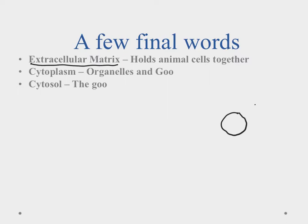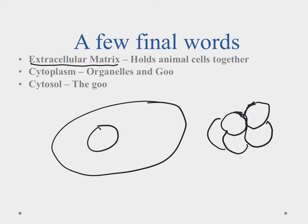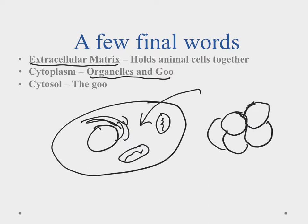In animal cells, the extracellular matrix is the outside material that allows cells to stick together and build larger organisms. Inside the cell we have the nucleus, mitochondria, endoplasmic reticulum, and other organelles. The cytoplasm refers to everything inside the cell membrane. The actual fluid that everything is suspended in is called the cytosol — it's important to know the difference between those two terms.